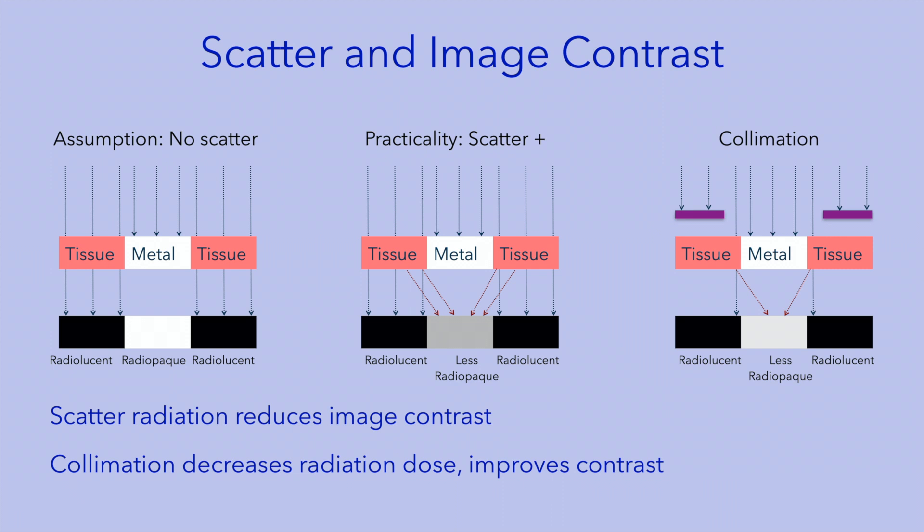By adding collimation — that is, restricting the beam size to just the area of interest — we decrease the amount of scatter radiation reaching the detector and minimize the adverse effect of scatter on contrast. Also note that collimation will not only improve your image contrast, it will also decrease the radiation exposure to your patient. So the beneficial effects of collimation are both on patient radiation safety as well as image quality.